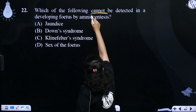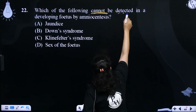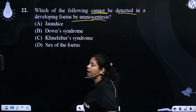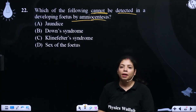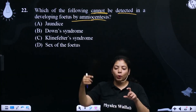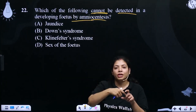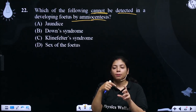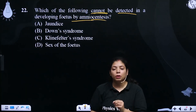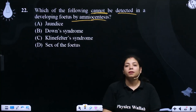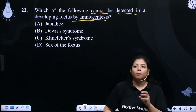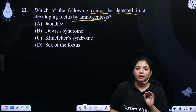Which of the following cannot be detected in a developing fetus by amniocentesis? Amniocentesis is a method in which we remove amniotic fluid using a needle, and in the amniotic fluid we study the cells and chromosomal patterns.